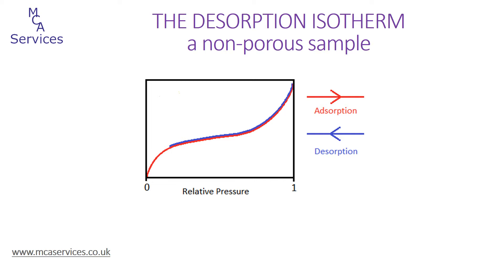Desorption is essentially the reverse process to adsorption. In practical terms, once the highest adsorption pressure has been attained and the adsorption volume has been determined, pressure is gradually and incrementally reduced and the adsorption volume is measured as adsorbate is removed from the sample. In the case of this theoretical isotherm on a non-porous sample, the desorption branch would be expected to follow the adsorption — that is to say, the process of adsorption is perfectly reversible.